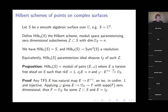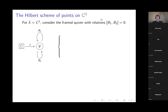Now I want to explain how to think very concretely about the Hilbert scheme in the simplest case where S is just ℂ², the affine plane. For S = ℂ², consider the following framed quiver with relations. It has two nodes: the square indicates the vector space is canonically trivialized, while the circle indicates a vector space that needs to be chosen.